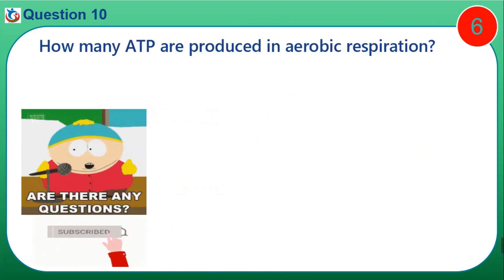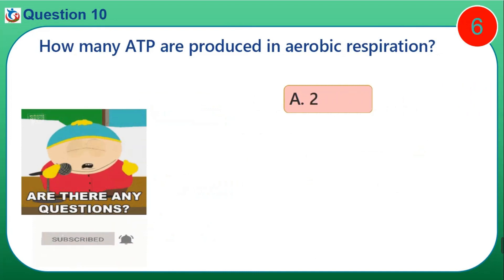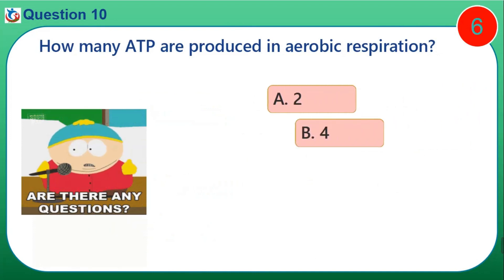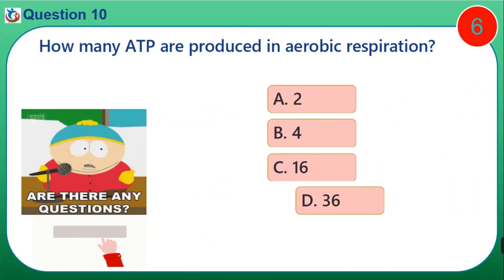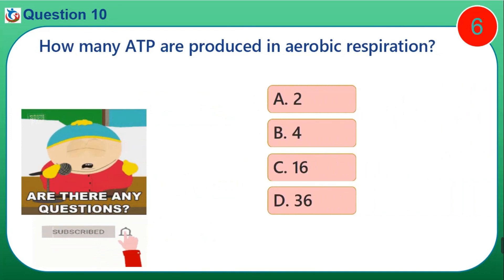Question 10. How many ATP are produced in aerobic respiration? A. 2. B. 4. C. 16. D. 36.